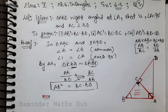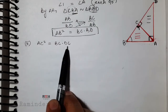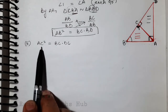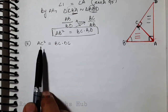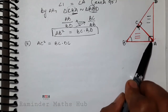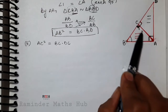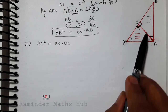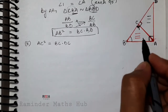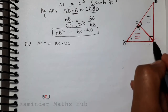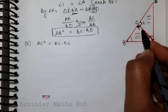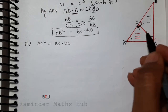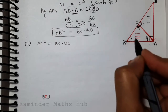अब करते हैं second part: AC² = BC·DC। AC का square है तो hint मिला कि दोनों triangles जिन्हें similar prove करना है उन दोनों में AC आना चाहिए। AC से बनने वाली triangles: एक है triangle ABC और एक है triangle ACD। एक angle तो clear नजर आ रहा है जो angle 1 in ACB और angle 2 in ACD - दोनों 90 हैं।